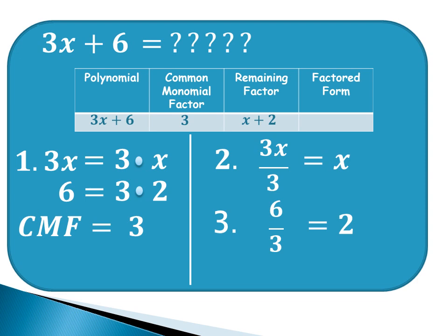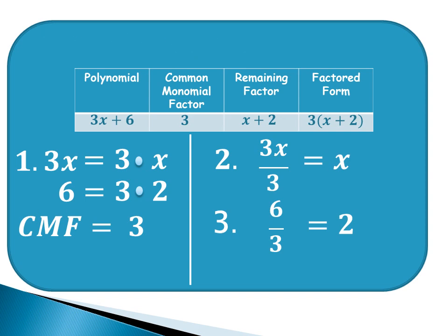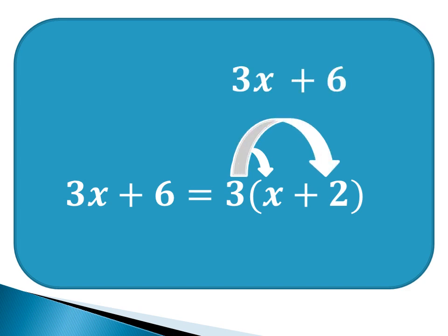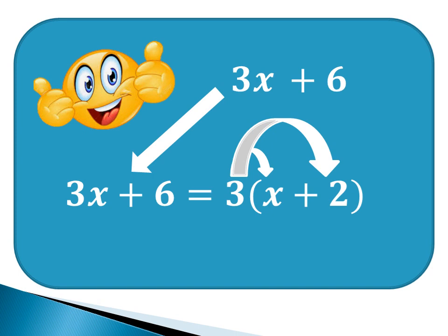The factored form is our final answer. Our factored form comes from the common monomial factor and the remaining factor, giving us 3 times the quantity x plus 2. Therefore, 3x plus 6 is equal to 3 times the quantity x plus 2. To verify our answer, we use the distributive property: 3 times x is 3x, and 3 times 2 is 6. Since our answer matches the given, our answer is correct.